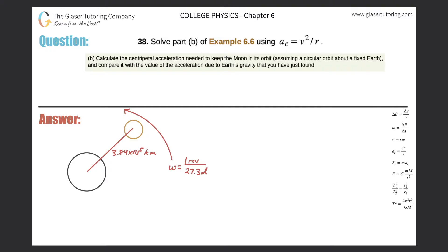Number 38, solve part B of example 6.6 using AC equals V squared over R. So letter B said, calculate the centripetal acceleration needed to keep the moon in its orbit, assuming circular orbit about a fixed Earth, and compare it with the value of the acceleration due to the Earth's gravity that you've just found.